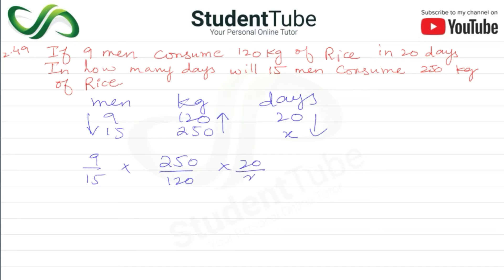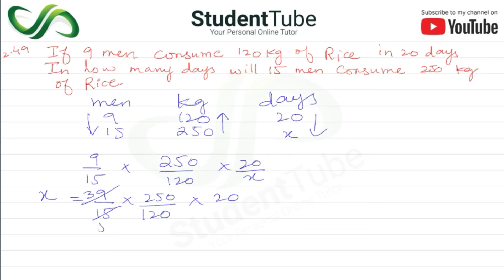Now here: 20 upon x, so x equals 9 upon 15 multiplied by 250 upon 120, and 20 here. Now we will solve this. Simplifying: 3 threes are 9, 3 fives are 15, and 2 sixes are 12.